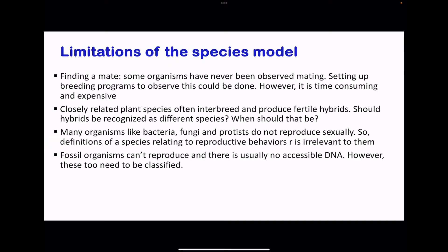Moving on to the limitations of the species models. Number one is finding a mate — some organisms may never have been observed mating, so breeding programs must be set up, which can be time-consuming and expensive. Also, closely related plants have been seen to interbreed and produce fertile hybrids — should these hybrids belong to a different species or the same species as their parents? Some organisms like bacteria, fungi, and protists do not reproduce sexually, making reproductive definitions irrelevant. Additionally, fossilized organisms have no accessible DNA, so how can they be classified without using the morphological concept? These are all questions that limit the different definitions of what a species is.